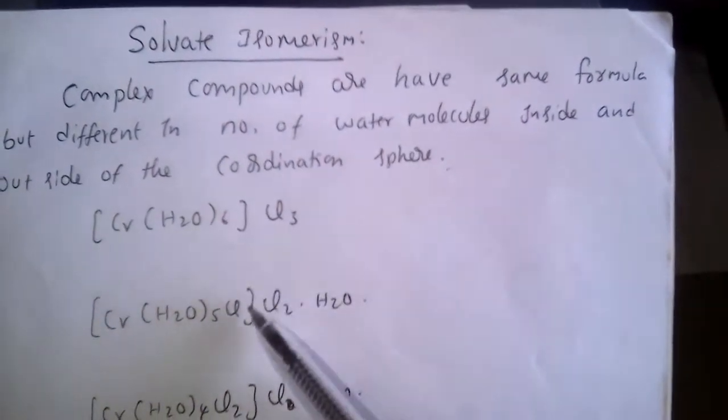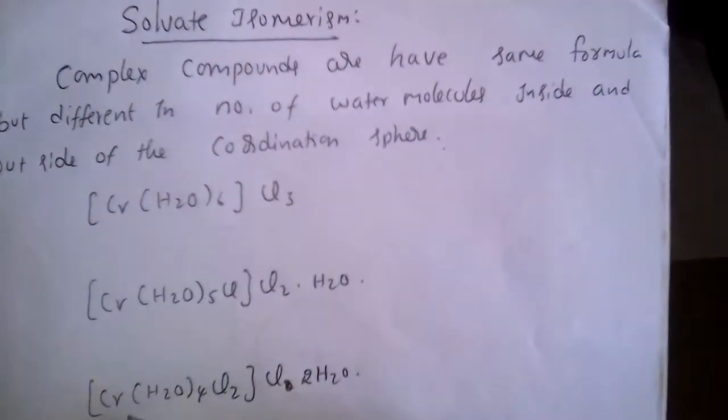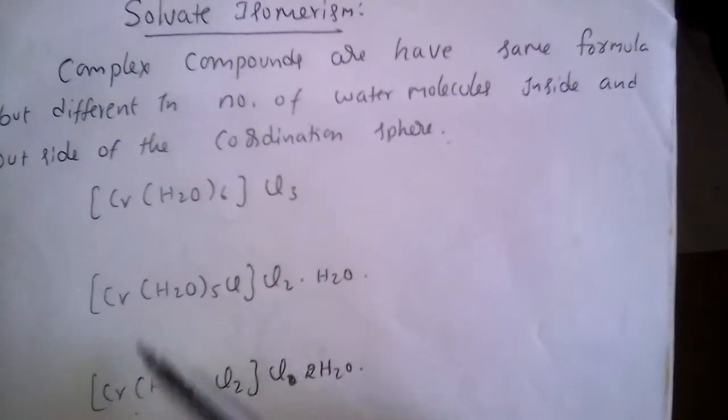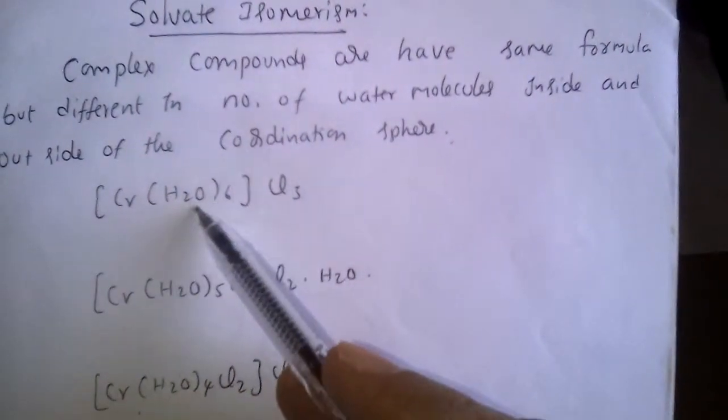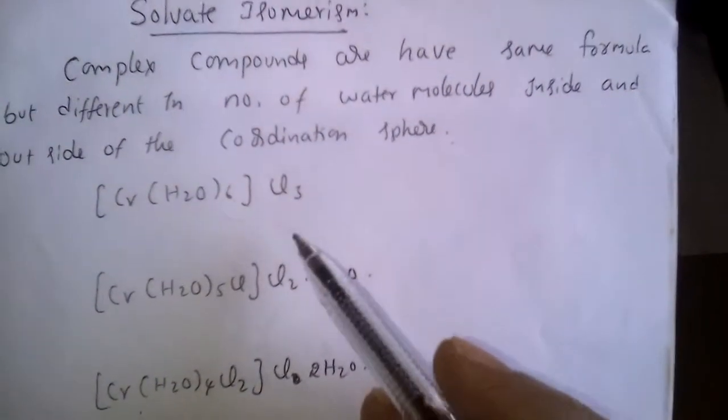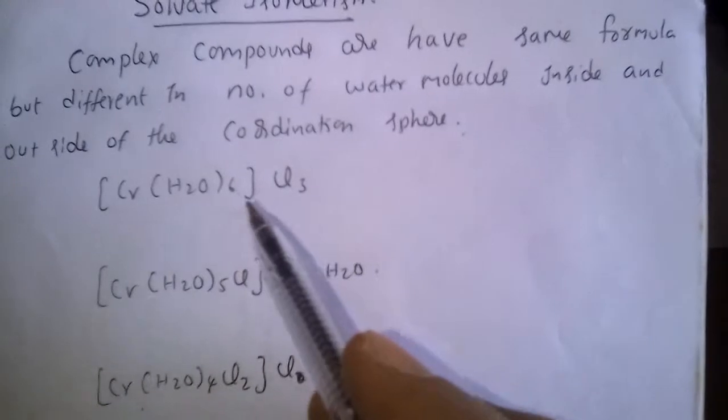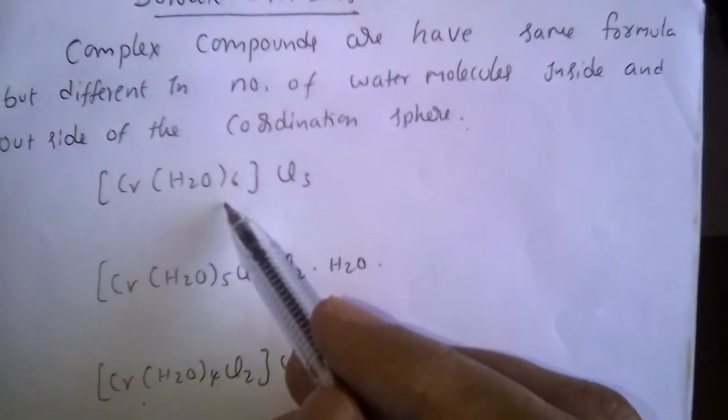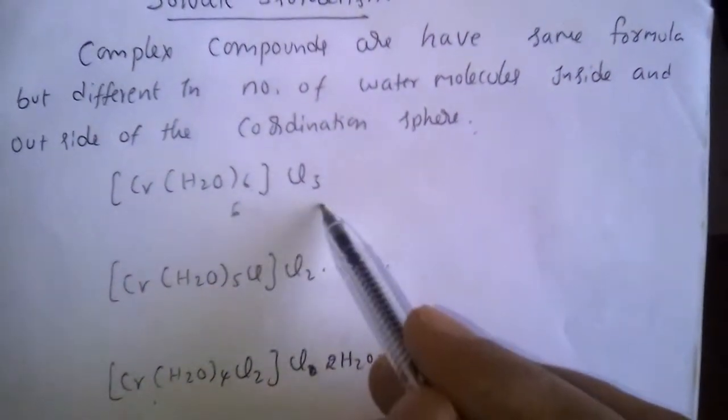For example, these three complexes have the same formula: [Cr(H2O)6]Cl3. Same formula but different in the number of water molecules inside and outside of the coordination sphere. Here, inside 6 water molecules, outside 0.